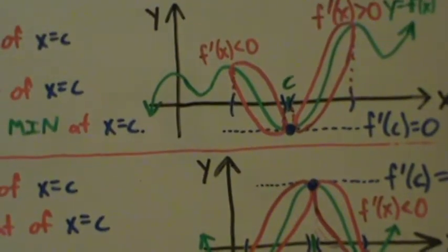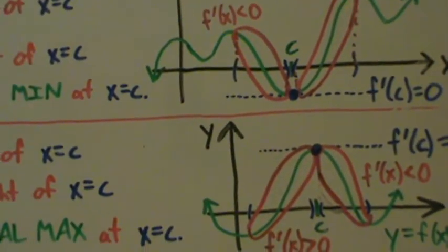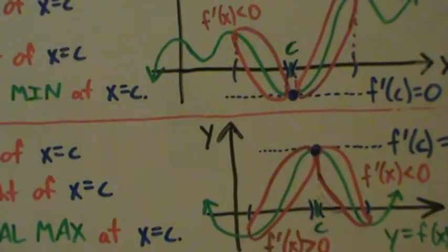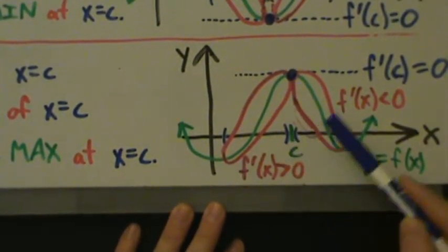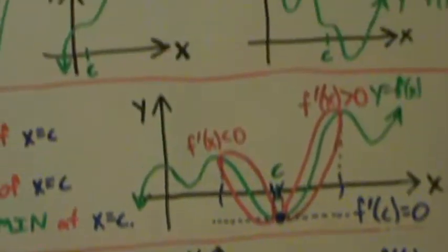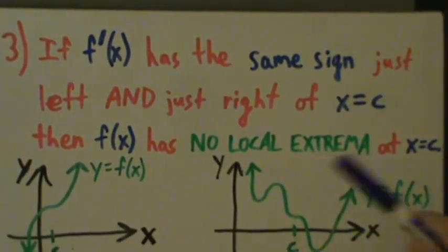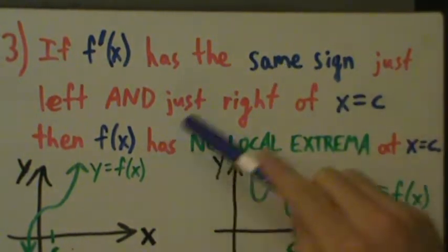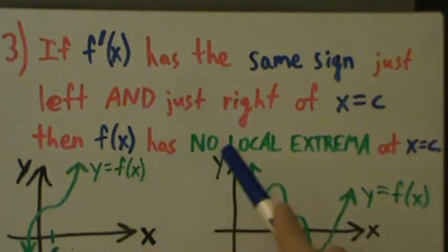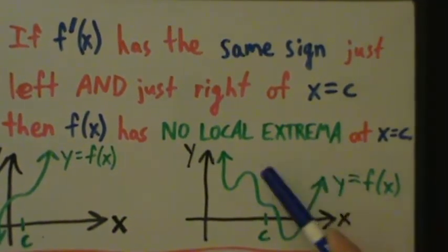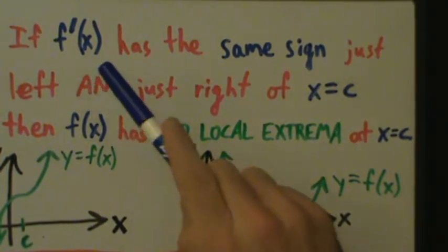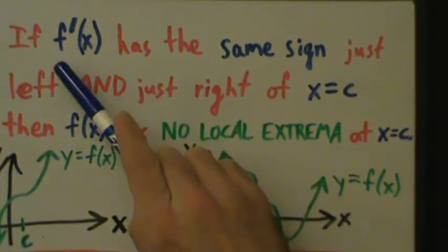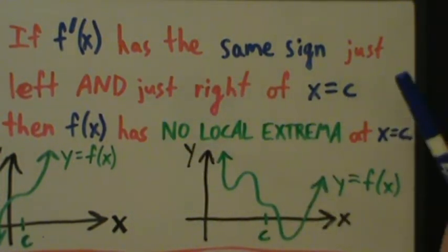Part three deals with the remaining cases. If f prime of x has the same sign just left and just right of x equals c, then f of x has no local extrema at x equals c. Remember, extrema is just a fancy word for mins and maxes. So if the derivative is positive on both sides of c, or negative on both sides of c, then the function has no local mins or maxes at x equals c.